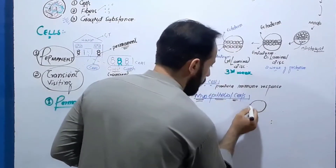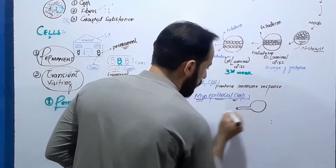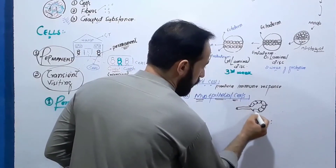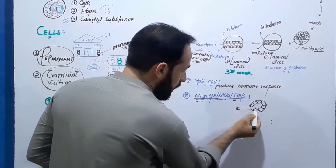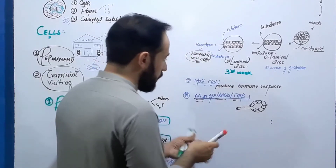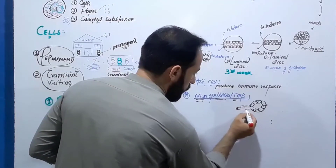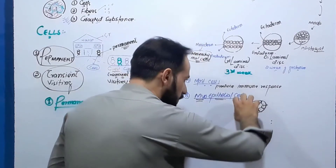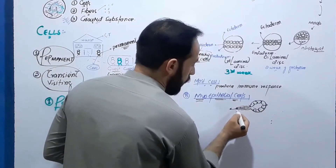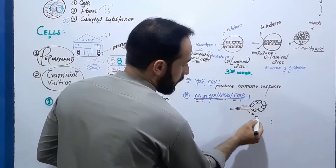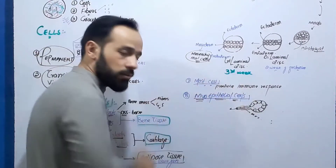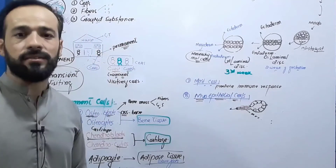For example, if there is a gland and it has secreted something into its duct, the myoepithelial cells present around the duct will contract and push the contents of the duct forward. These are the myoepithelial cells, and they are also permanent cells of the connective tissue. I will have a separate lecture on myoepithelial cells.